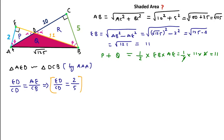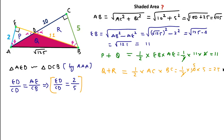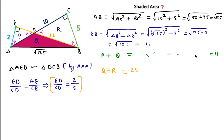Also, Q plus R area equals the area of triangle ACB, which is a right angle triangle. So (1/2) × base × height = (1/2) × AC × BC = (1/2) × 10 × 5 = 25. So Q + R = 25 square units and P + Q = 11 square units.